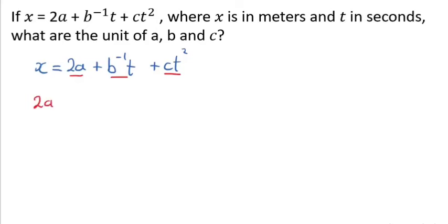So we can have the first term 2a equals x, the second term is b negative 1 t equals x, the last term is ct squared is also equals to x. So let's make a the subject of the formula throughout.